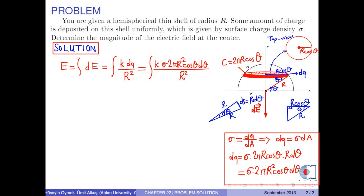Now, we put this value into the integral. Since the charge is deposited in this shell uniformly, then the surface charge density sigma is constant. Also, k and 2 pi are constant. Therefore, they can be taken outside the integral sign.